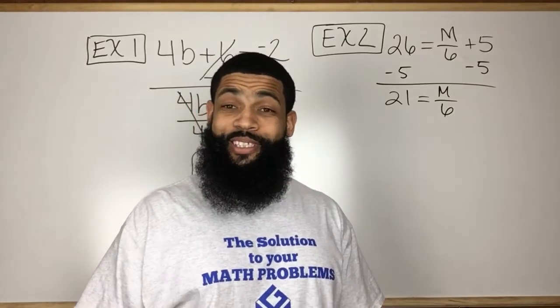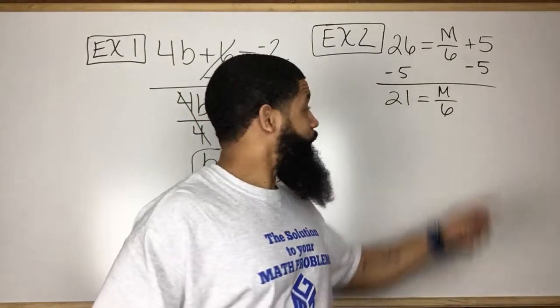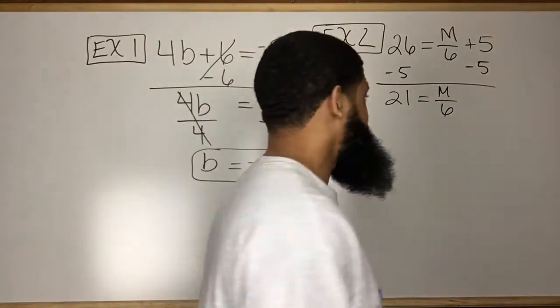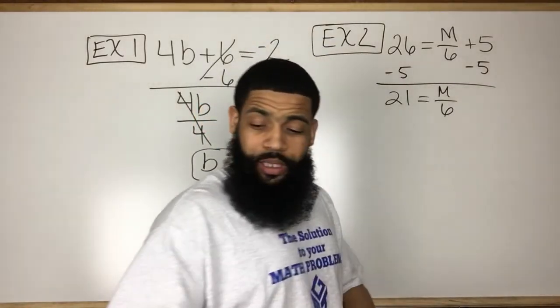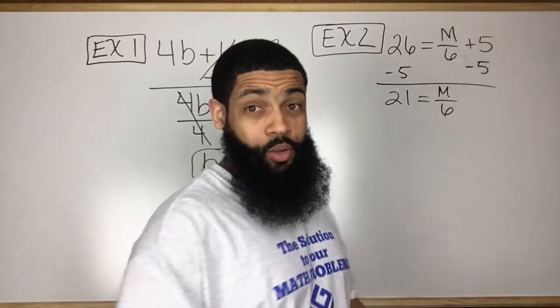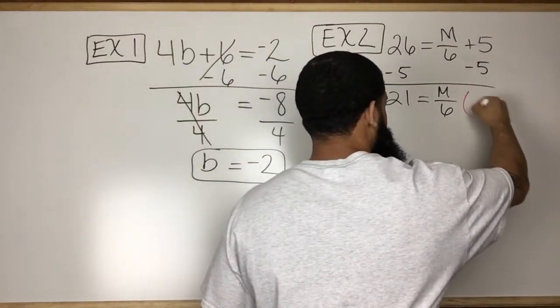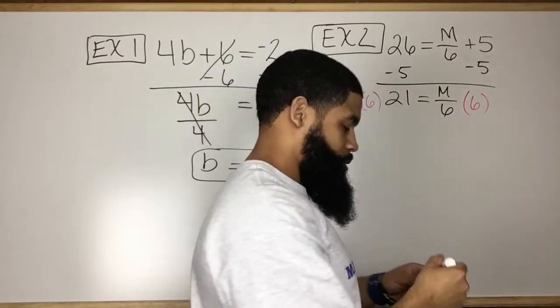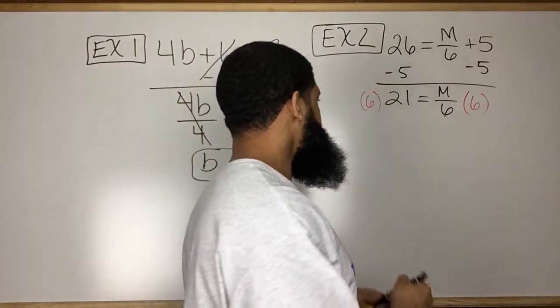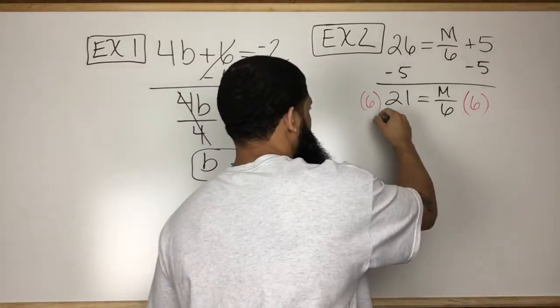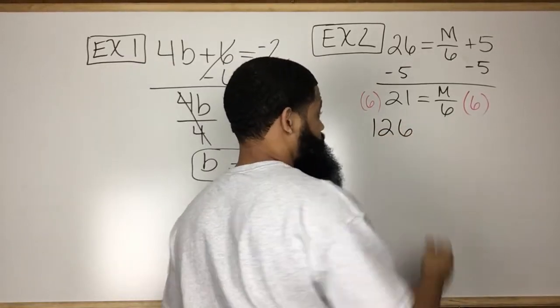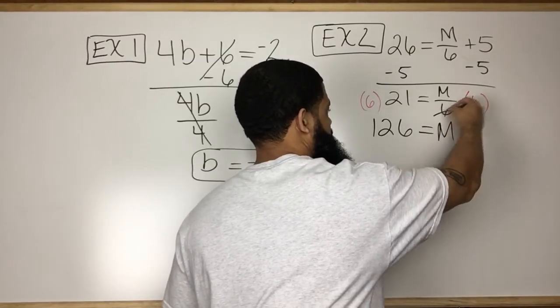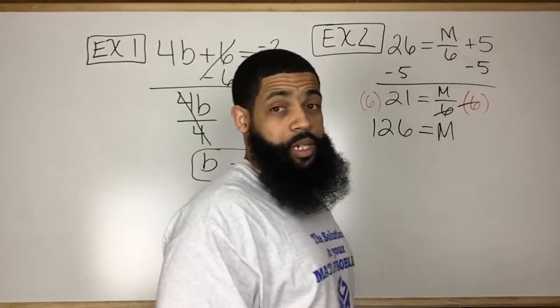Now remember, a fraction bar represents division. And so the opposite of dividing a number by 6 is multiplying that number by 6. So what I'm going to do is I'm going to multiply both sides by 6. So times 6 there, times 6 there, that's going to give me 126 is equal to m, because this and this, they cancel out.